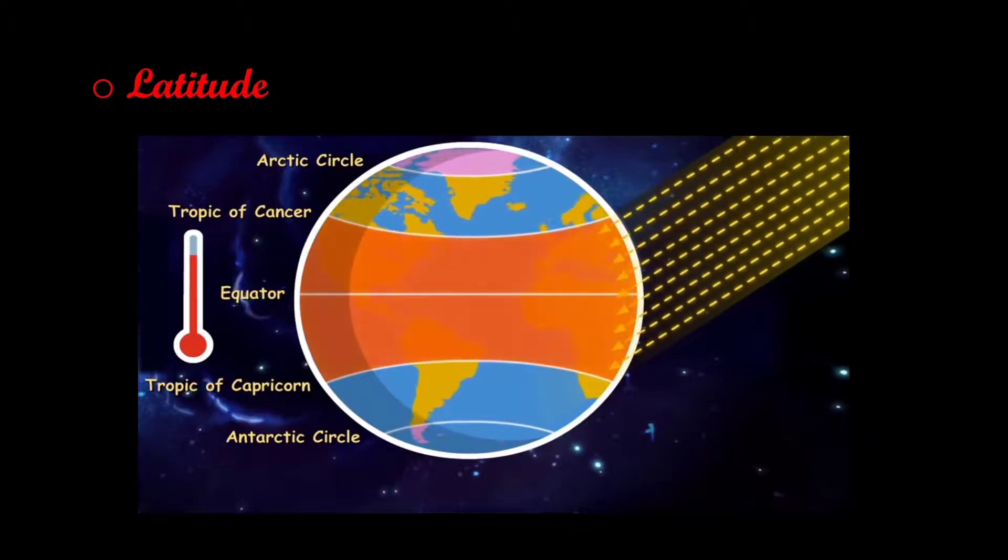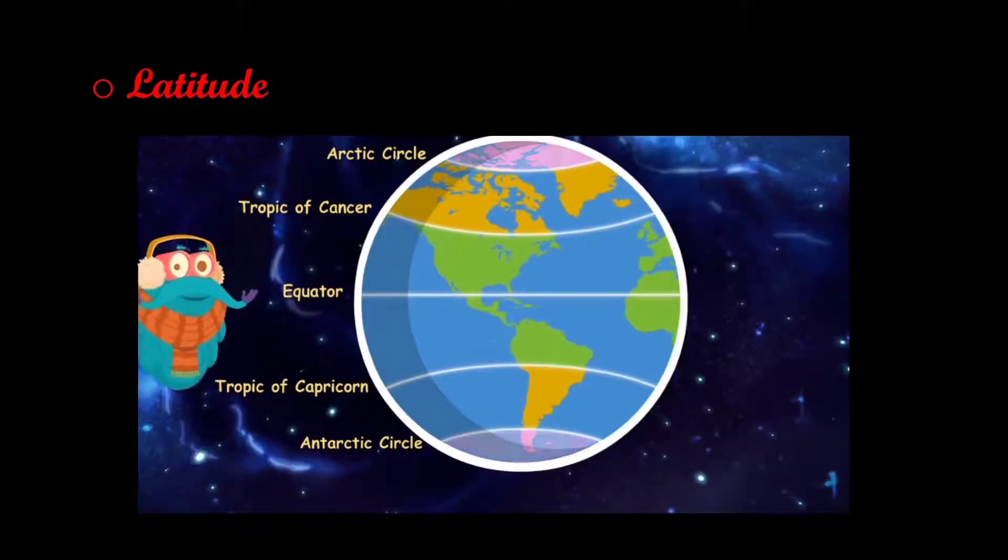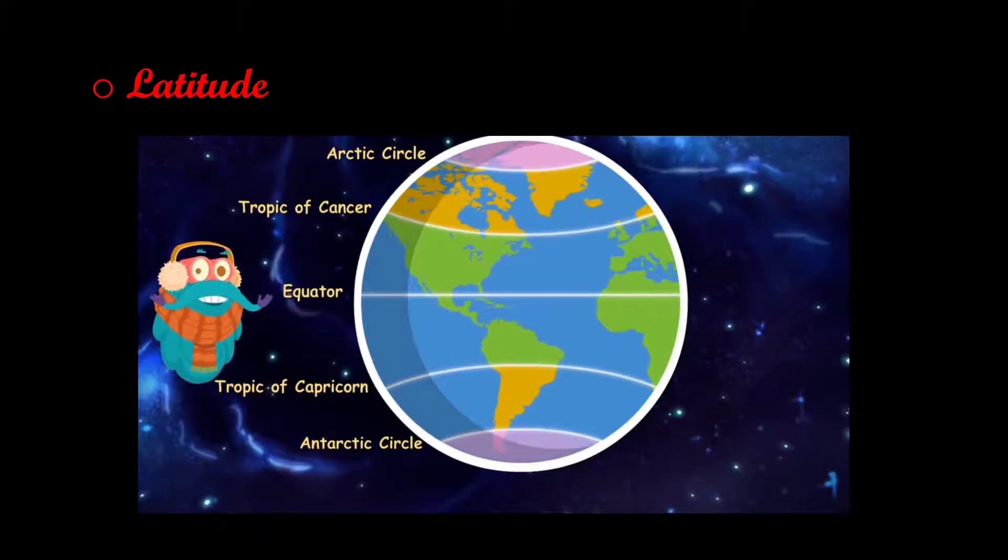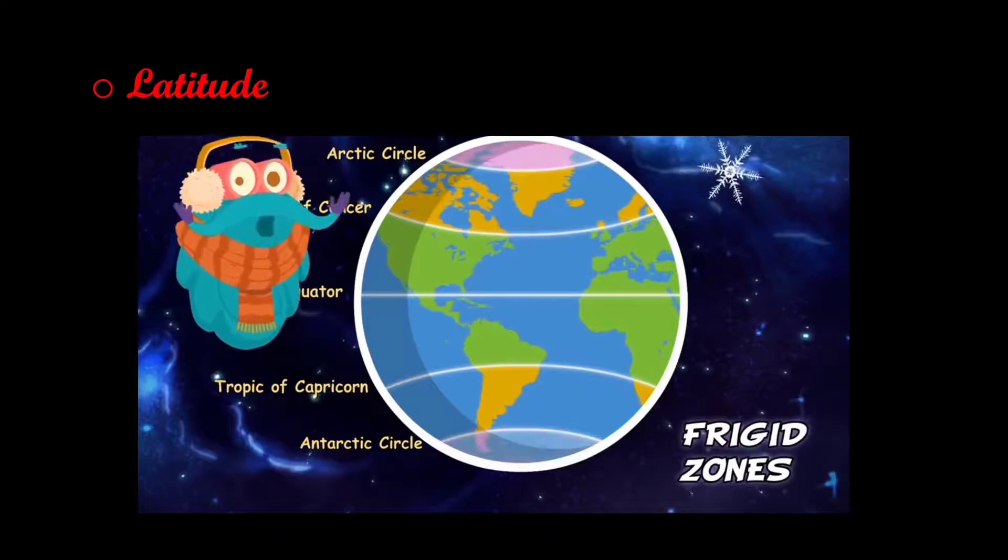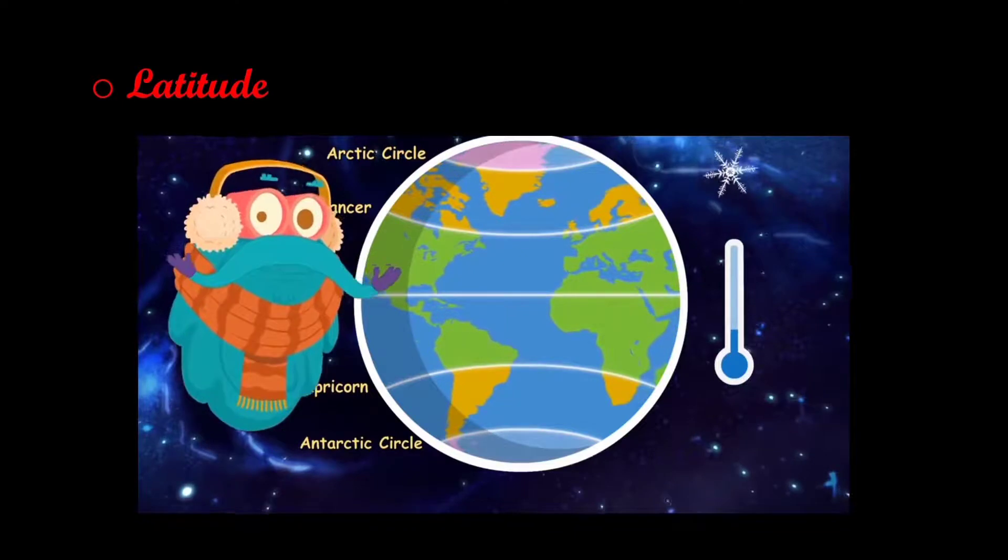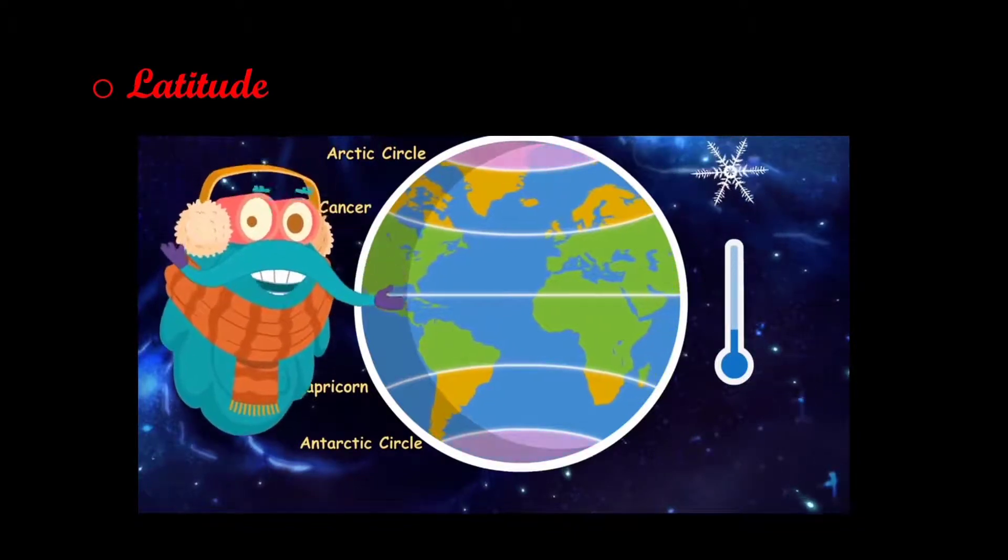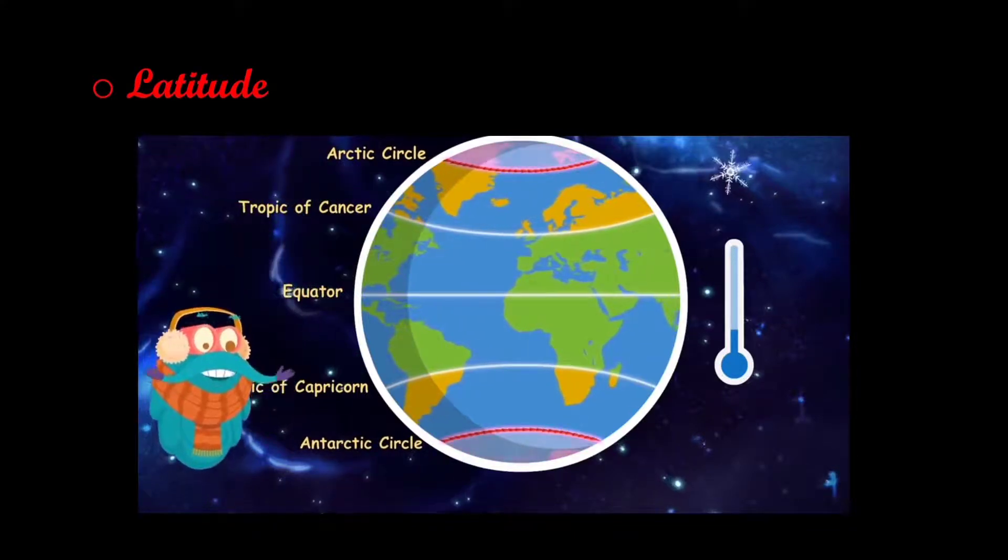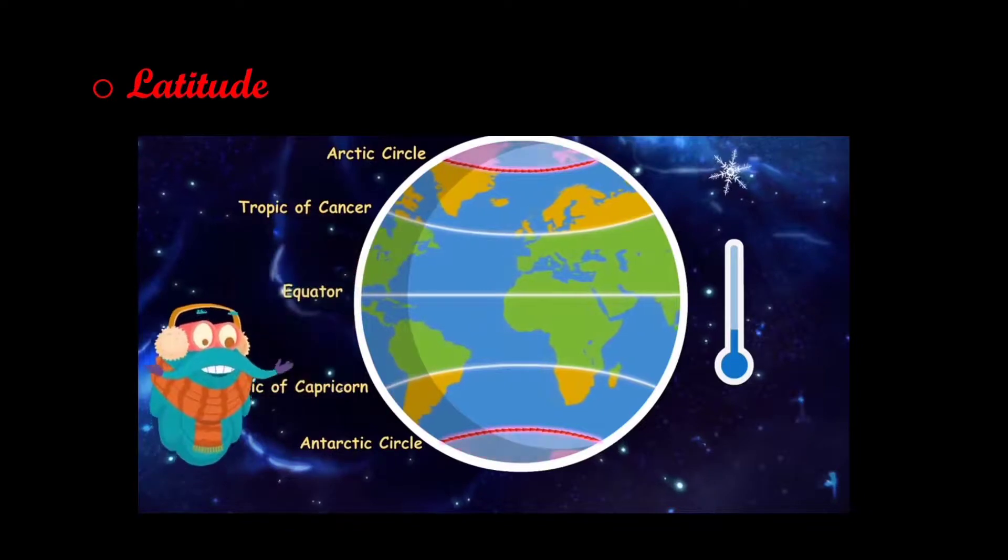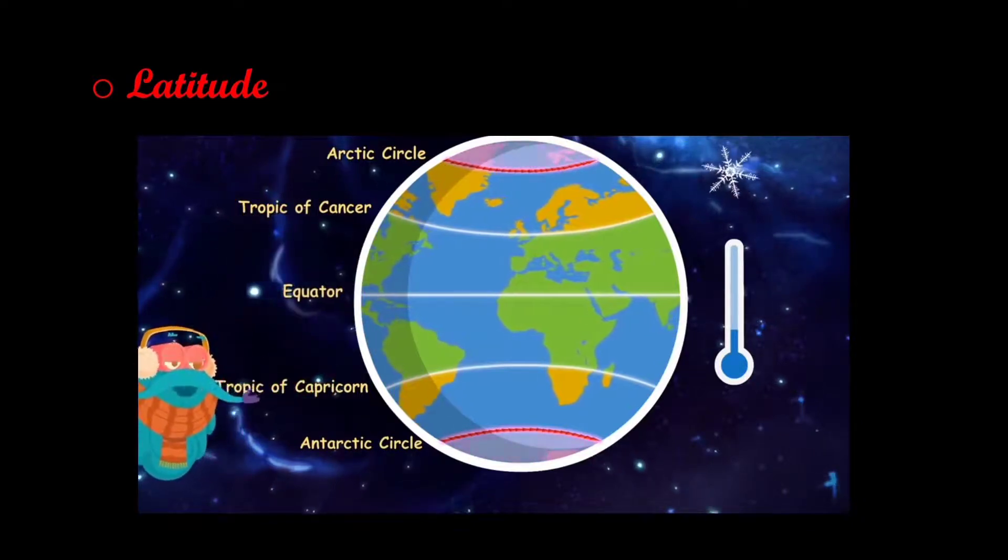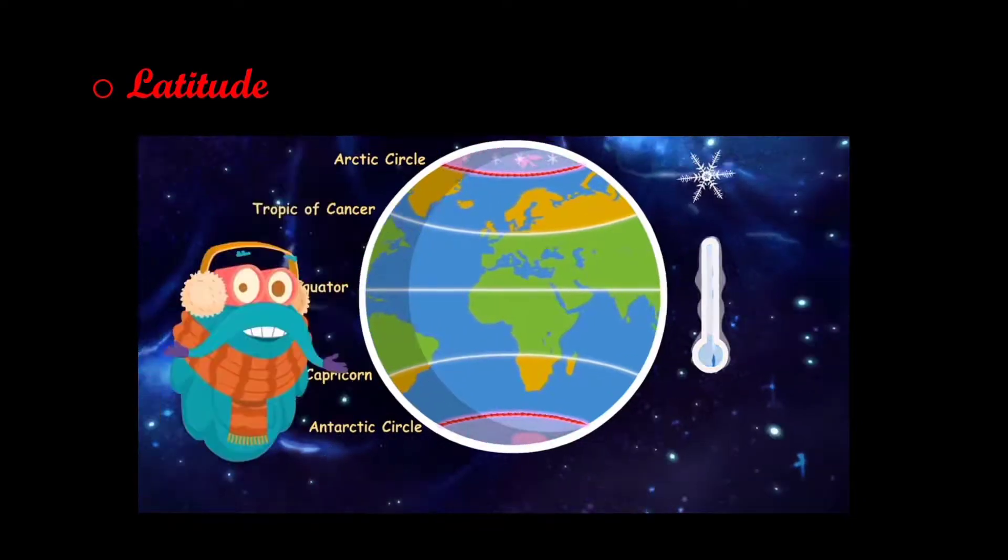Frigid zone refers to the area of the earth near the north and south poles. It is the coldest part of the planet. These zones lie beyond the Arctic and Antarctic circles. These areas get slanting rays of the sun and are thus cooler, so you know they are freezing.